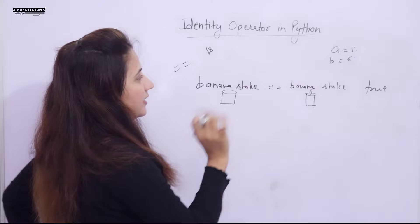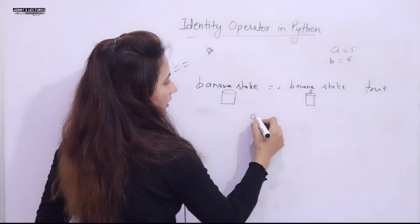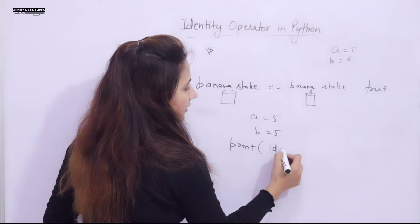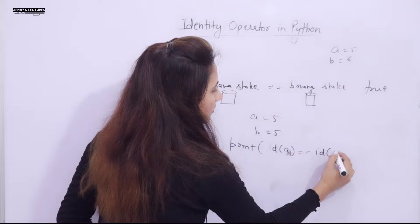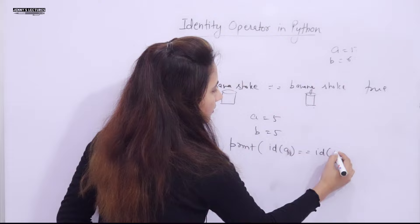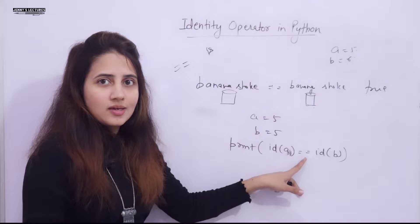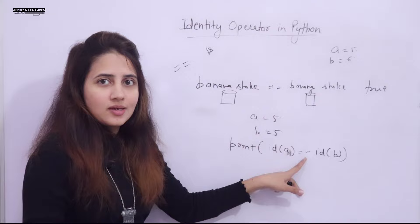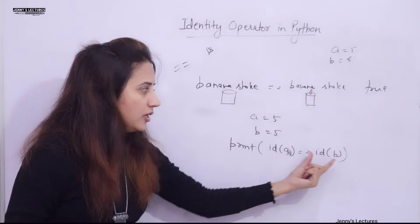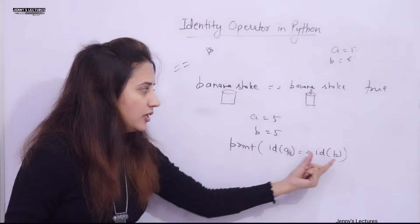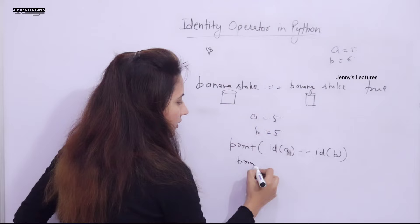So if `a = 5` and `b = 5`, writing `print(id(a) == id(b))` behaves somewhat like `print(a is b)`, because in both cases we're ultimately comparing the same memory address. You can write either form — both lines behave the same way here.